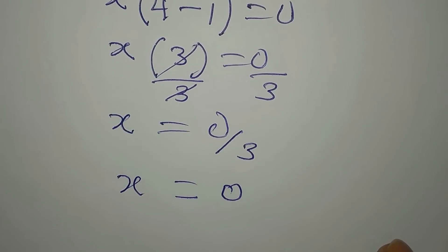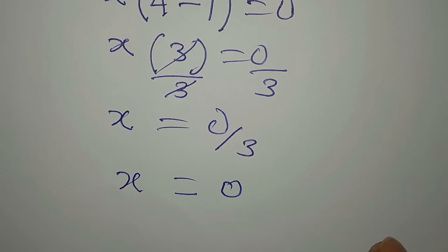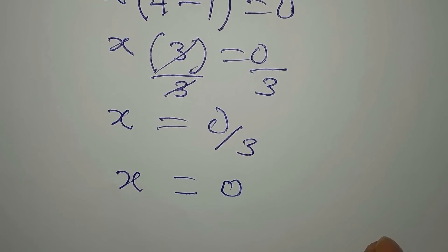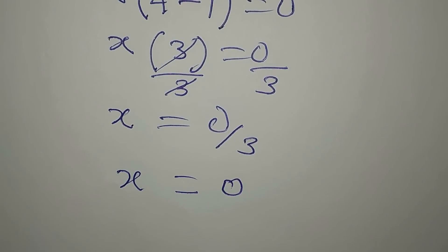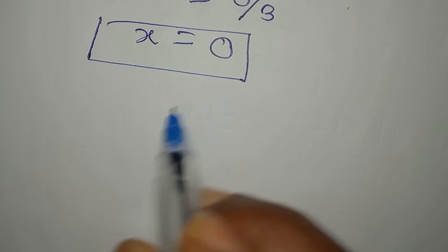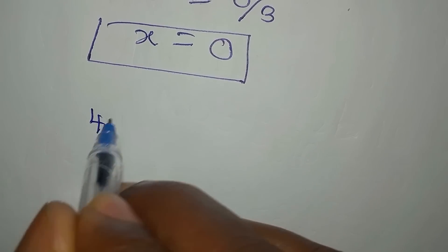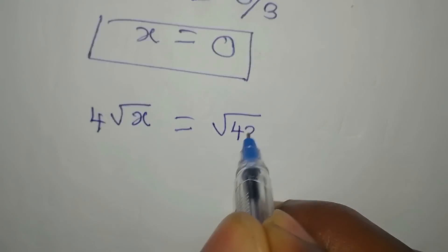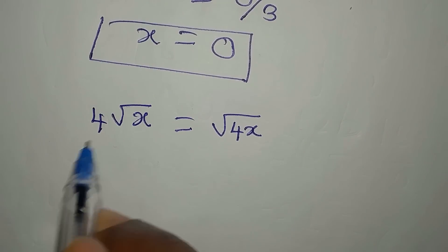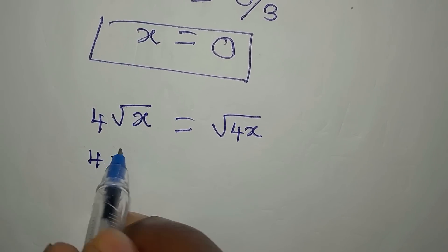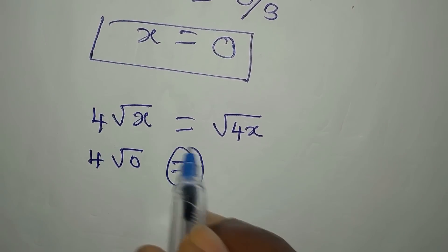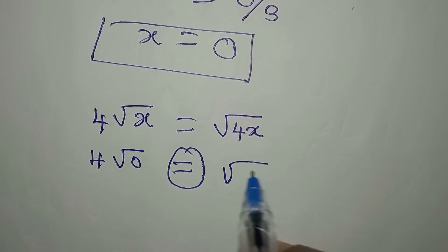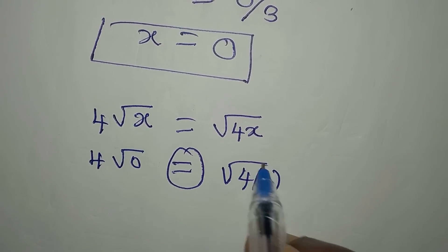The first method and the second method are both giving us 0. Now let's verify the work. The equation is 4 root x equals square root of 4x. So if we put 0 now, it means we have 4 root 0 equals square root of 4 times 0.